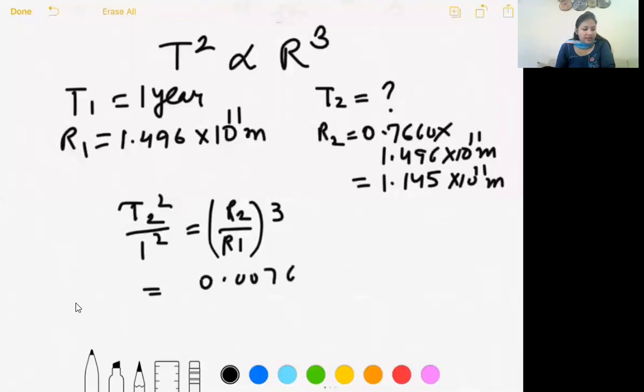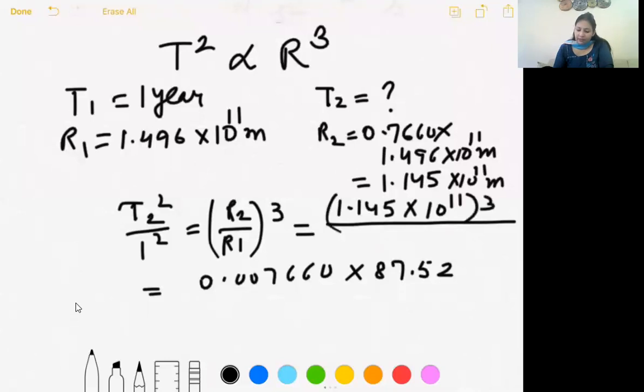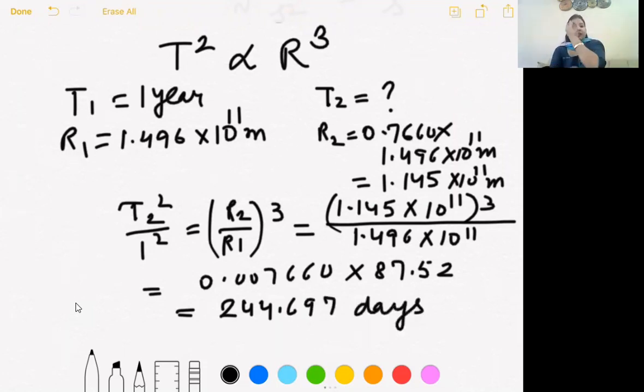Isko solve karke aayega 0.007660 into 87.52. Basically aapko R2 over R1 ka cube solve karna hai. 1.145 into 10 rest par 11 cube divided by 1.496 into 10 rest par 11. Answer aayega 244.697 something days. Ye aapka answer.